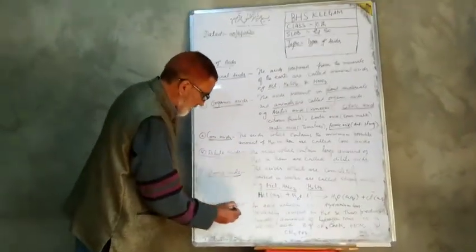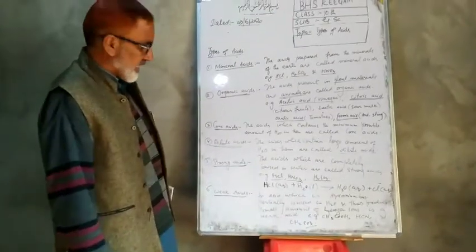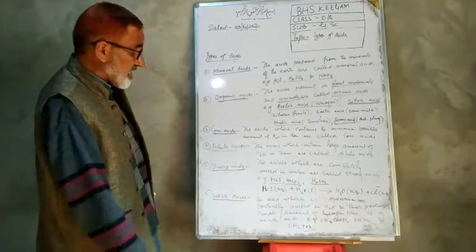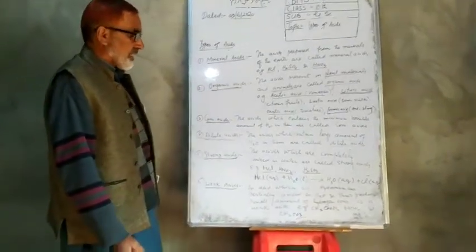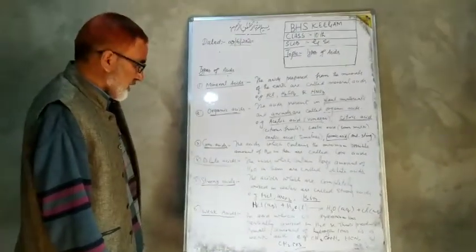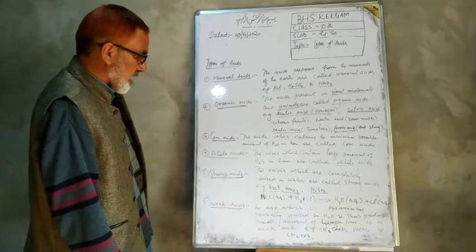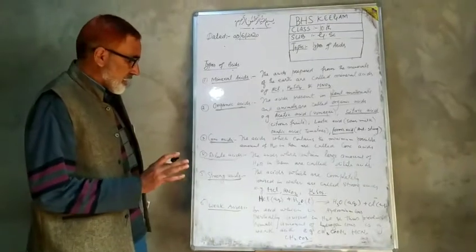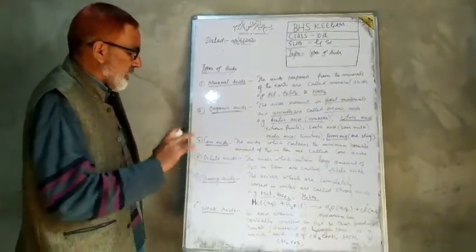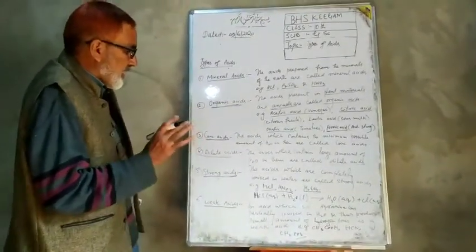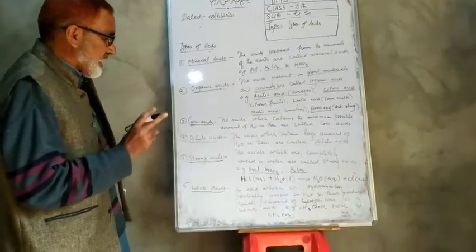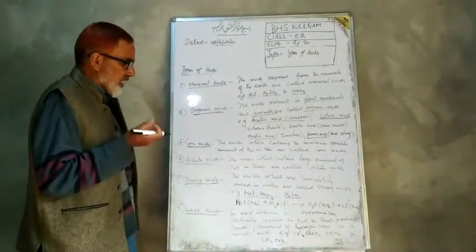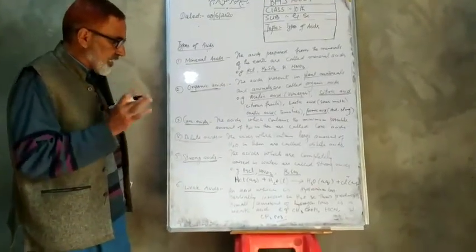Weak acids are acids which are partially ionized in water and thus produce a small amount of hydrogen ions. Weak acids are not completely ionized in water. These are called weak acids.